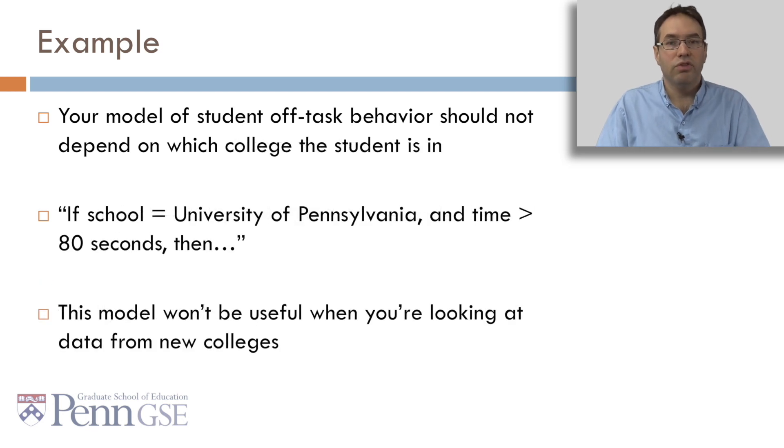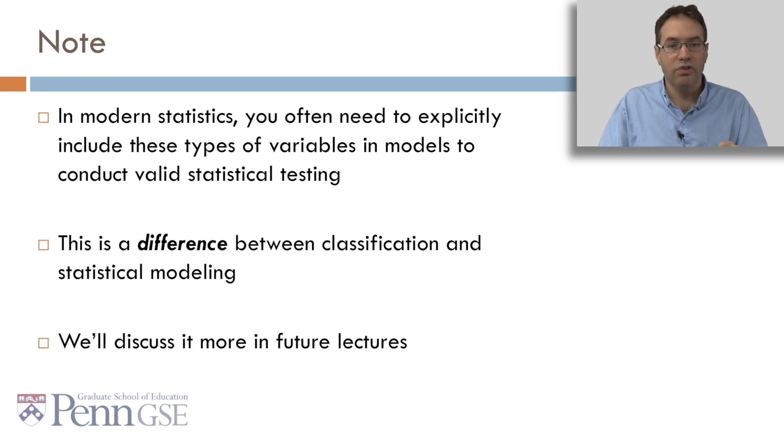Also, your model of student off-task behavior shouldn't depend on what college the student's in. So your model shouldn't say, if the school is the University of Pennsylvania and the time is more than 80 seconds, then... Because this model is not going to be useful when you're looking at data from new colleges or new schools. Instead, you want to make sure that the model works across the colleges and schools that you have. Now note, in modern statistics, you often need to explicitly include these types of variables in models to conduct valid statistical testing. This is the difference between classification and statistical modeling, and we'll discuss it more in future lectures.